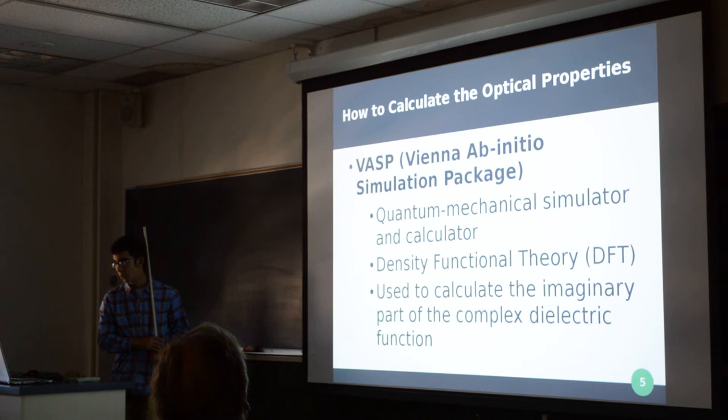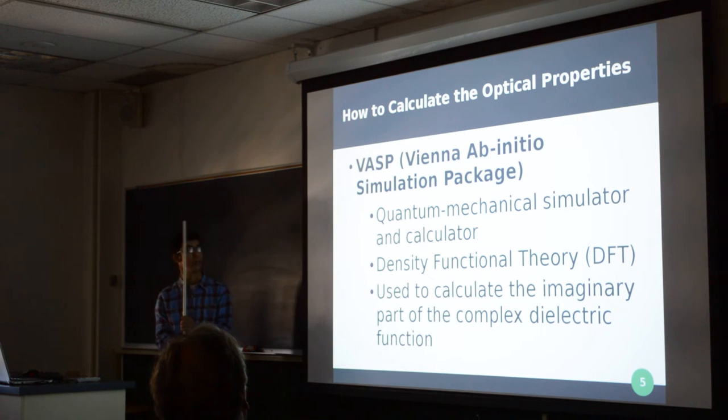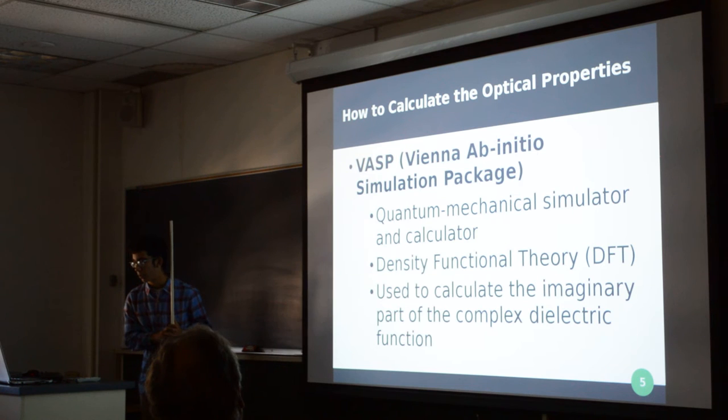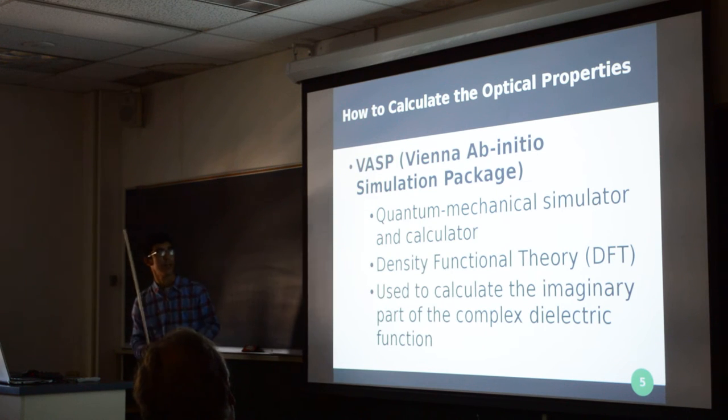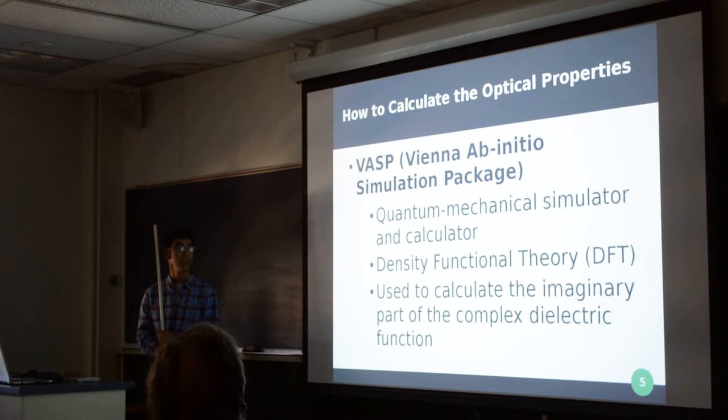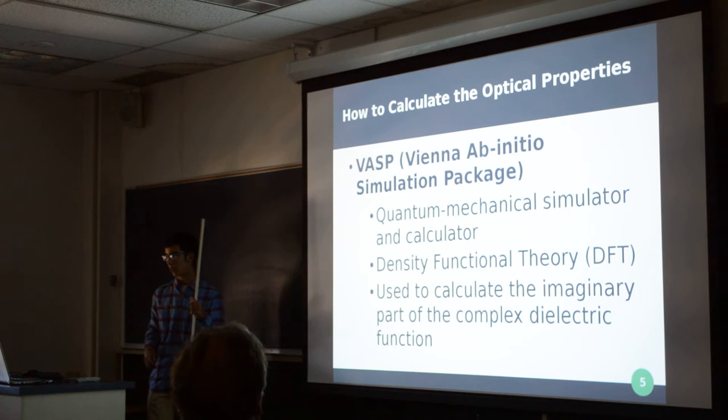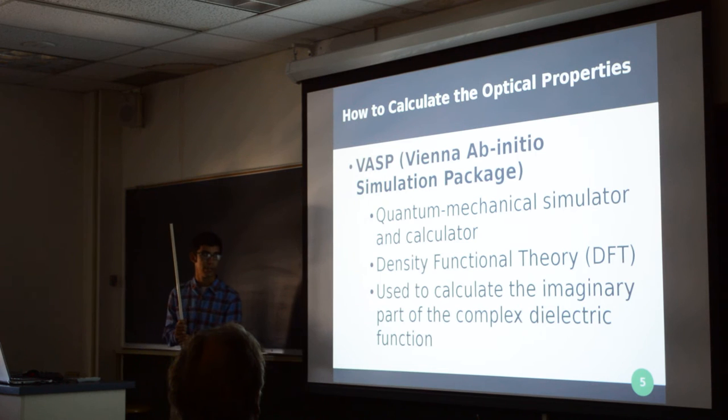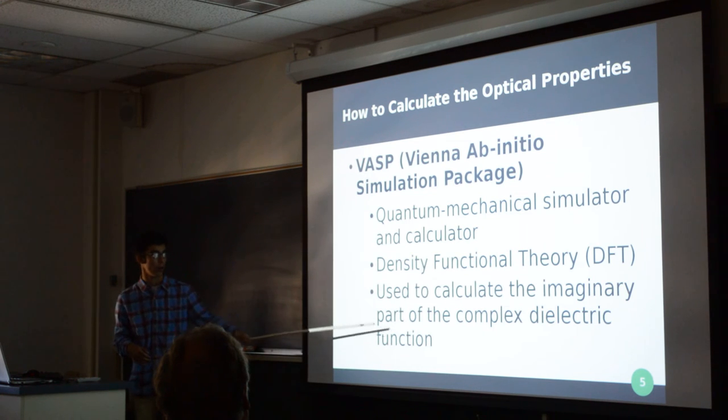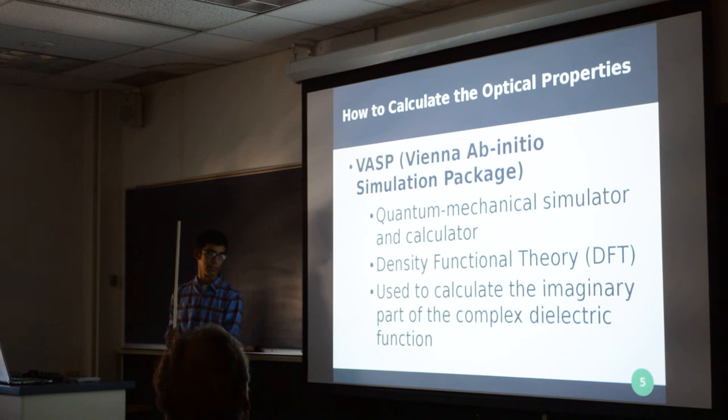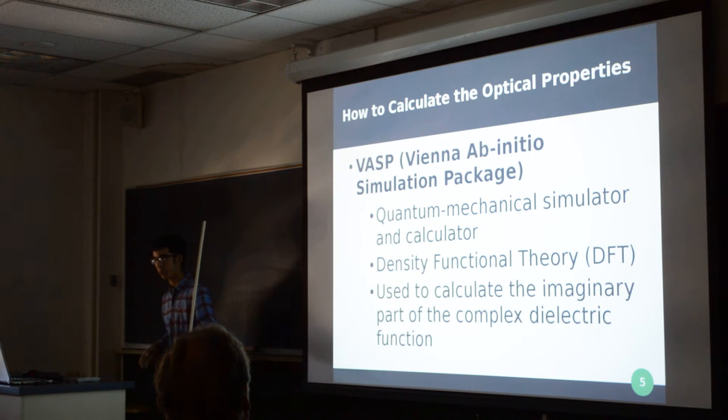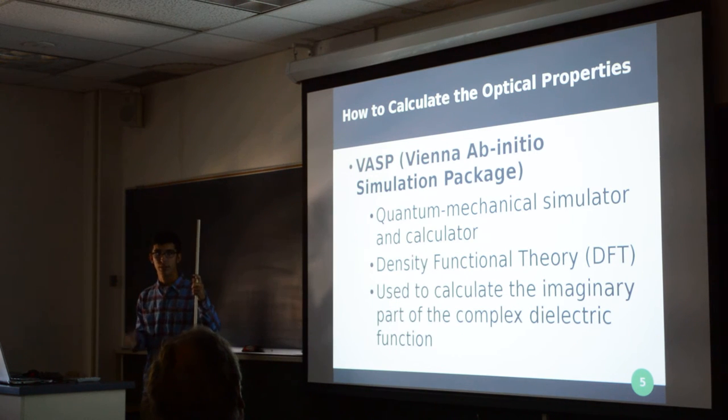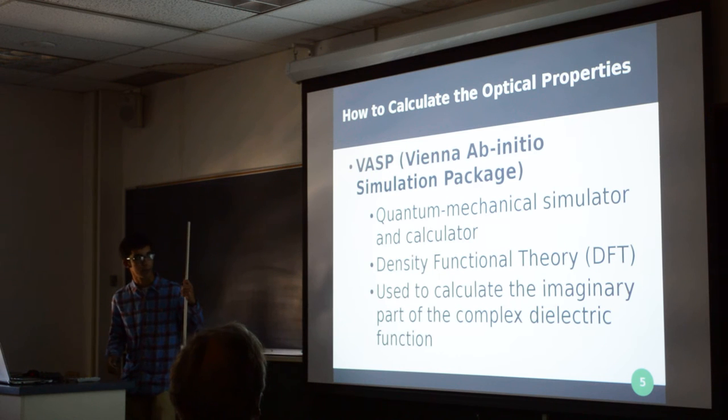Now, getting into how I actually calculate the properties, I use a package called VASP, the Vienna Ab initio Simulation Package. And what it essentially is, it's a quantum mechanical simulator and calculator that uses density functional theory. Now, when calculating the optical properties, it uses a crazy-looking equation to calculate the complex, the imaginary part of the complex permittivity. So, it calculates epsilon two, which uses a relation to calculate epsilon one from the values of epsilon two.